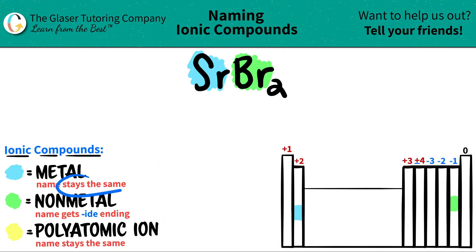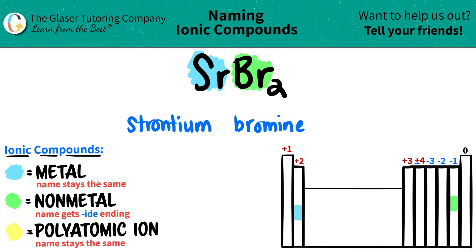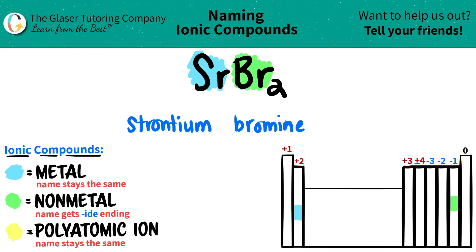The metal name always stays exactly the same. So SR was strontium on the periodic table, and it's going to stay strontium. For bromine, which is Br — that was what it was on the periodic table — but the nonmetal always gets the '-ide' ending. So it won't be bromine anymore; I'll drop the '-ne' and add '-ide'. So bromine becomes bromide.